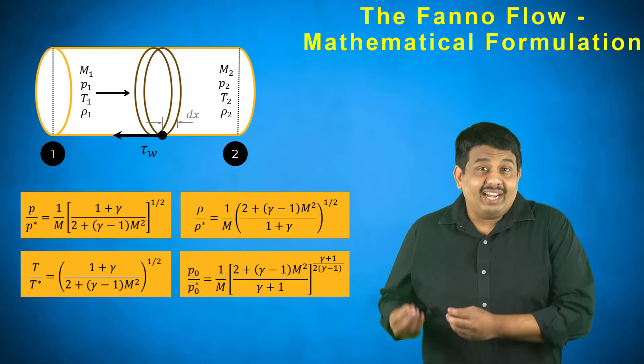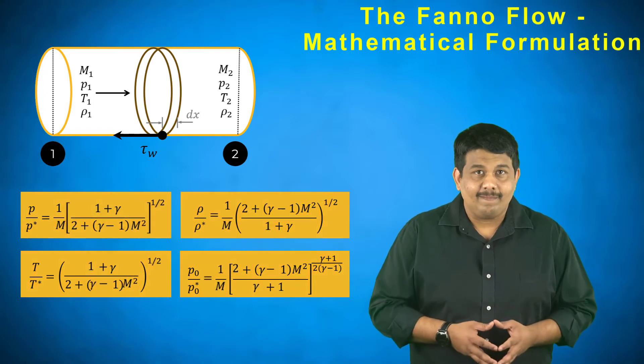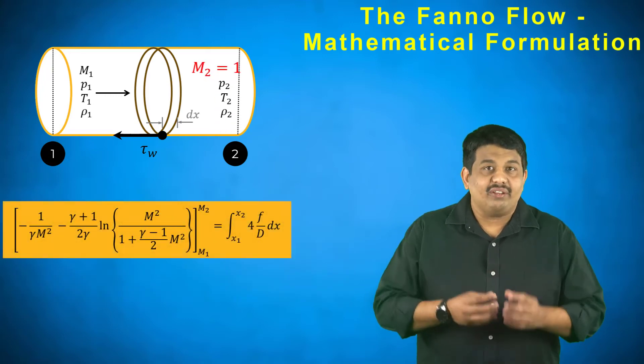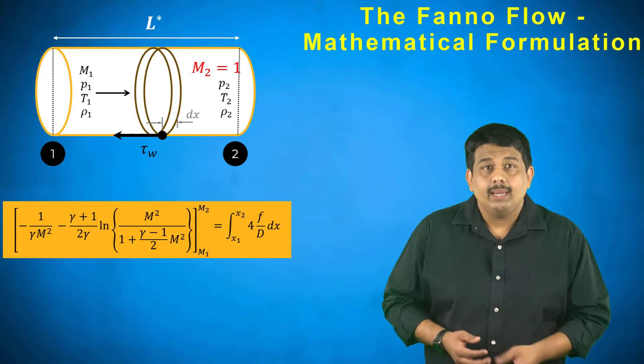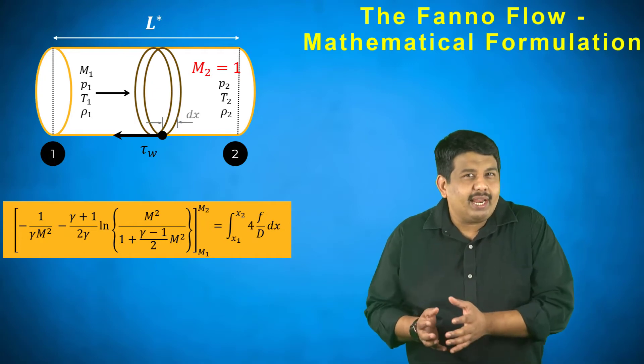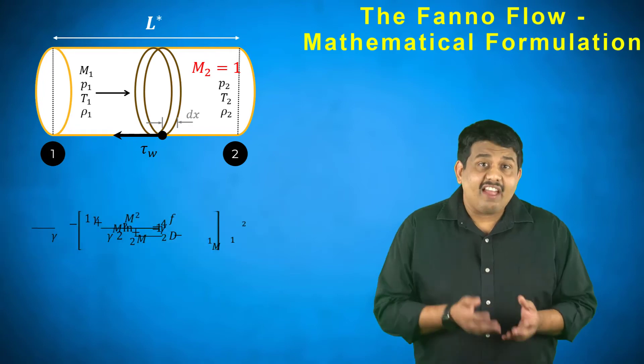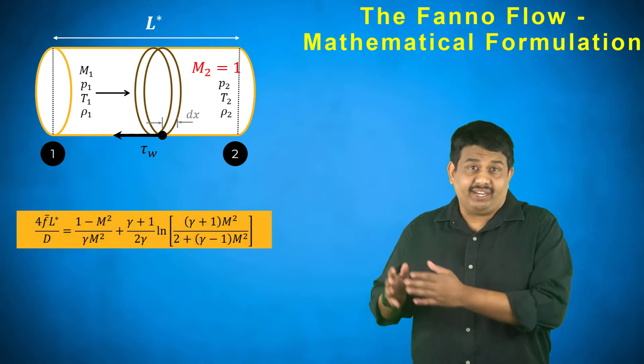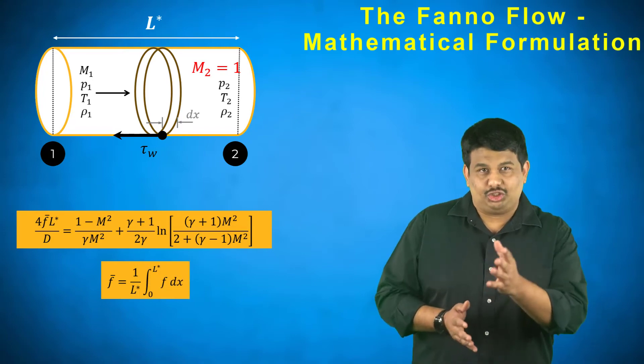Moreover, if we define a critical length x is equal to L star as the location where the flow becomes sonic, i.e. m is equal to 1, we obtain the following relationship for the choking length. Here, f bar is the average friction coefficient and its mathematical definition is shown here.